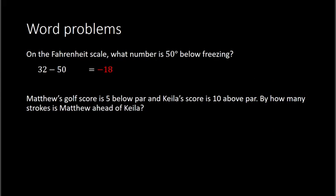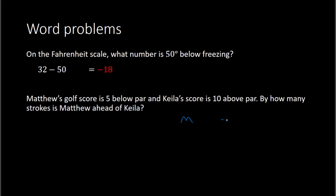Example 2: Matthew's golf score is 5 below par, and Kayla's score is 10 above par. By how many strokes is Matthew ahead of Kayla? Matthew is 5 below par, meaning negative 5. Kayla is 10 above par, which is positive 10. I'm finding the difference between Kayla's score and Matthew's score: 10 minus negative 5. Minus a negative becomes a plus, so we have 10 plus 5, which equals 15.